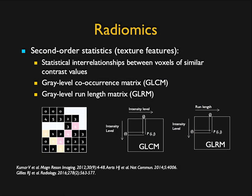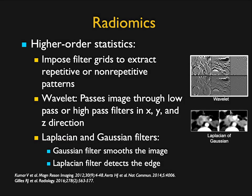Then you look at second-order statistics, which include gray-level co-occurrence matrices and gray-level run-length matrices. Higher-order statistics allow you to impose multiple different filters to accentuate variation and key findings. As you pass through this, it becomes a very important way of thinking about how we look at information.